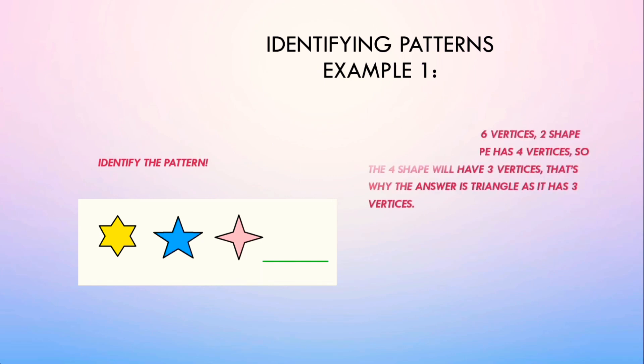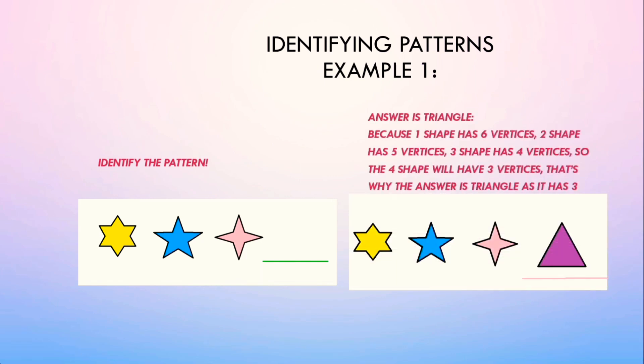Identifying Patterns Example 1. Identify the pattern. Answer is triangle. Because first shape has 6 vertices, second shape has 5 vertices, third shape has 4 vertices, so the fourth shape will have 3 vertices. That's why the answer is triangle, as it has 3 vertices.